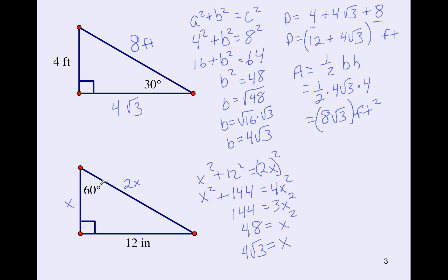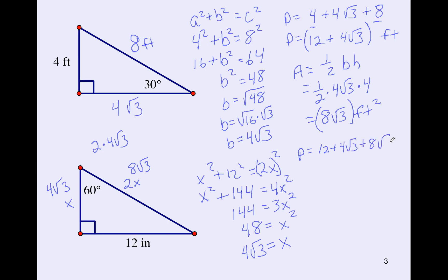x is equal to 4√3 — coincidentally the same result as the previous problem. So the shortest side is 4√3, and the hypotenuse is twice that: 2 times 4√3. The outside numbers multiply (2 times 4 is 8) and the inside stays, giving 8√3. The perimeter is 12 plus 4√3 plus 8√3. Combining like terms, the perimeter is 12 plus 12√3 inches.